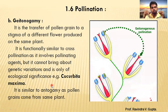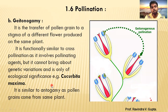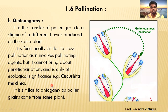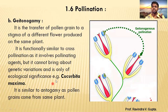Since the gametes come from the same plant, the chromosomes remain the same. Therefore, there is no genetic variation in the offspring — no genetic variation in the new plant formed from the seed.